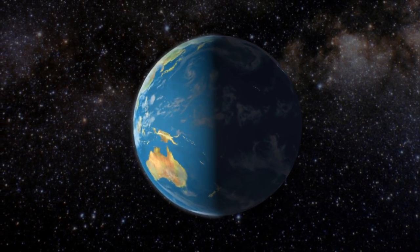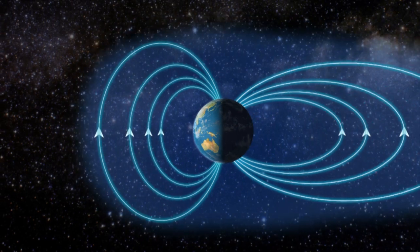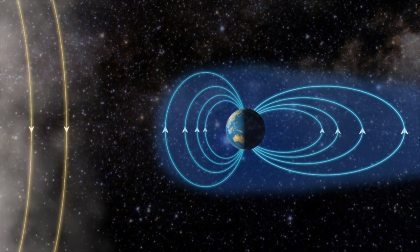When the solar storm reaches our planet, something strange happens. An invisible shield, the Earth's magnetic field, deflects the storm.